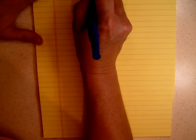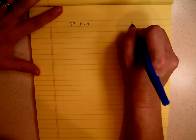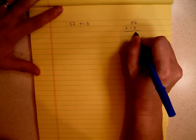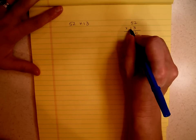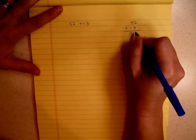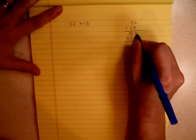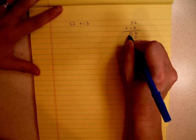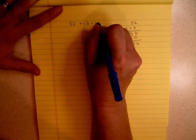If I were to ask you to multiply 52 times 13, the way that I learned is 52 times 13: 3 times 2 is 6, 3 times 5 is 15, and I put a 0, 1 times 2 is 2, 1 times 5 is 5. Now I add these: 6 plus 0 is 6, 5 plus 2 is 7, and 1 plus 5 is 6. So my answer is 676.